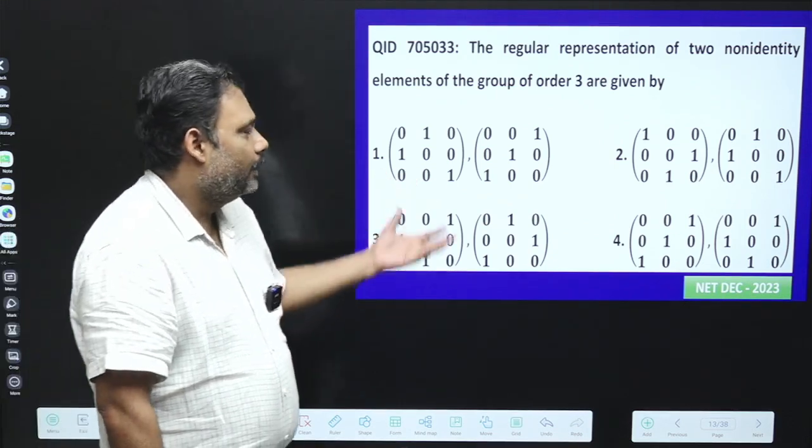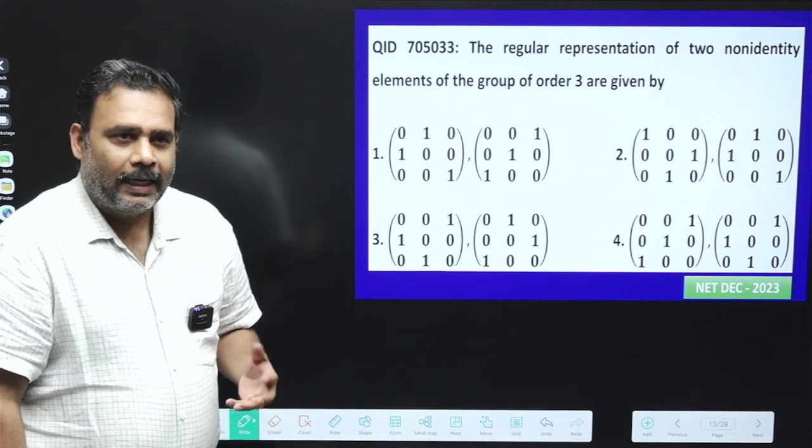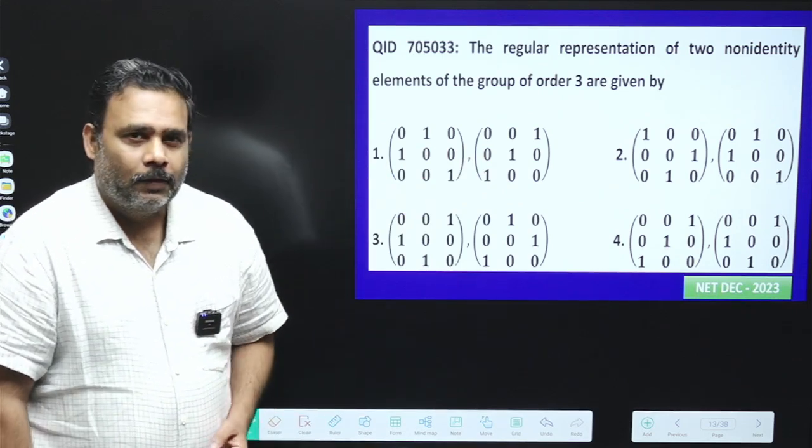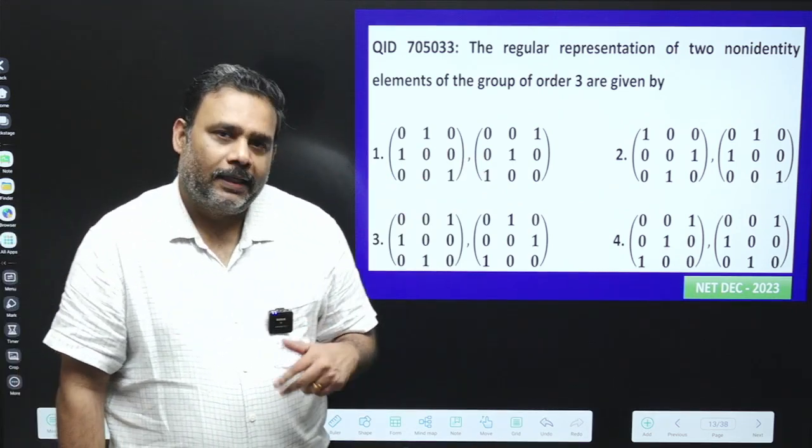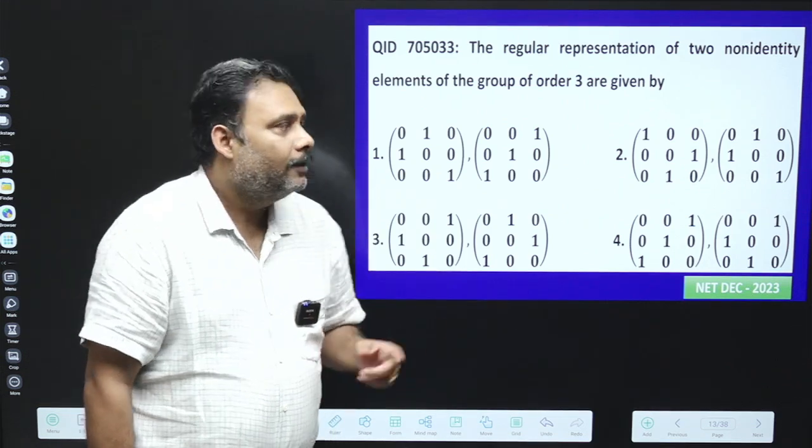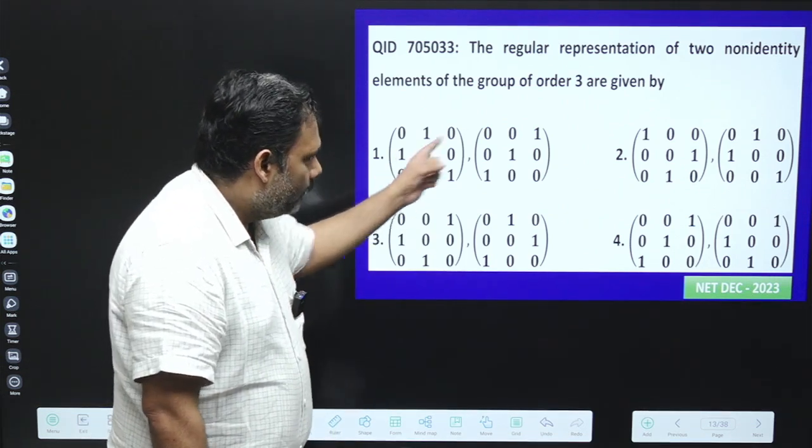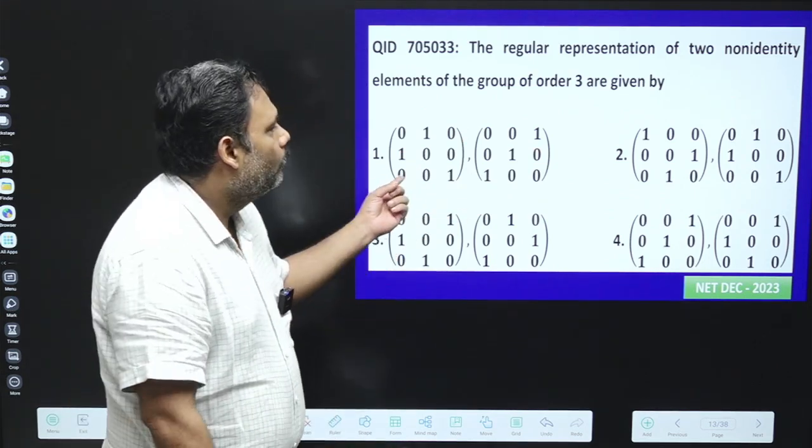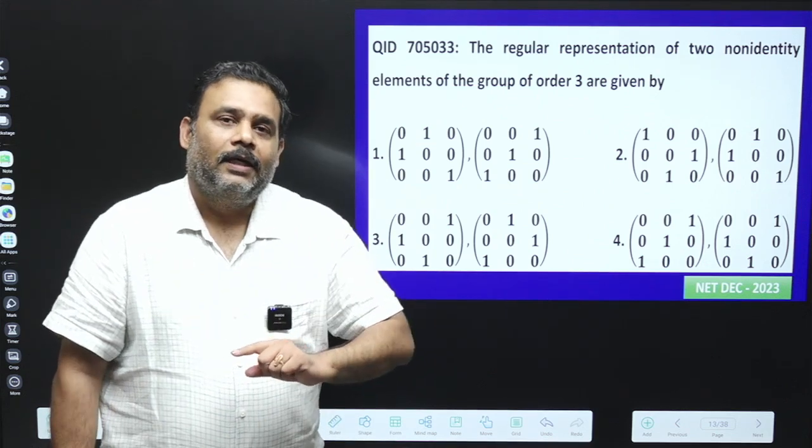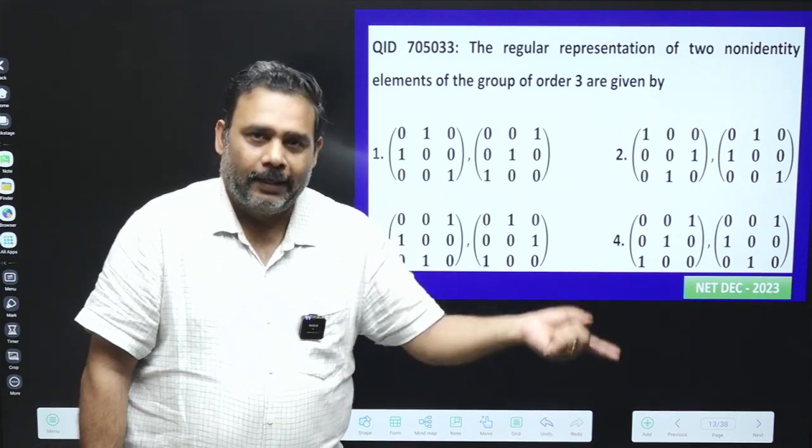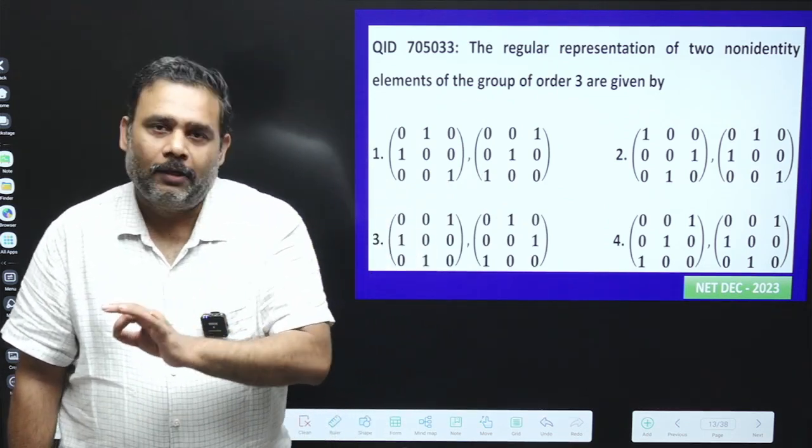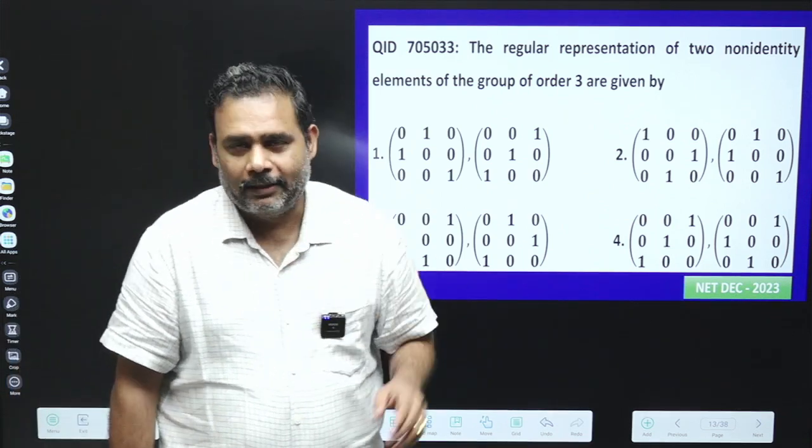And if we are taking the matrix multiplication as my operation, because this is just a matrix representation of a group. So if we are talking about the matrix multiplication, then whatever the matrix is given in the options, if we are doing the multiplication, after the multiplication it must be identity. Because identity must be an element of the group. This is a very necessary condition of a group.